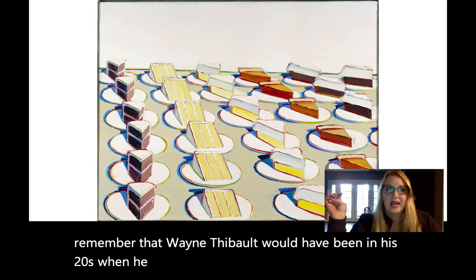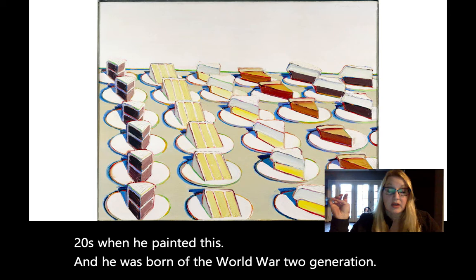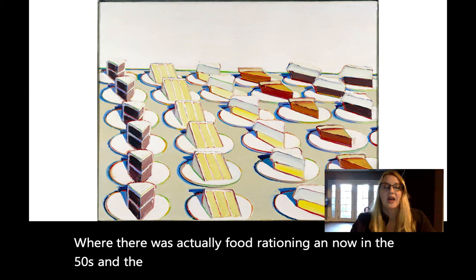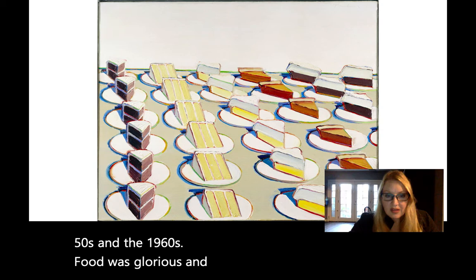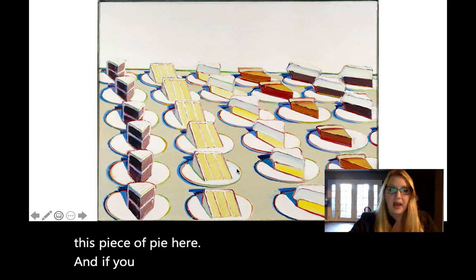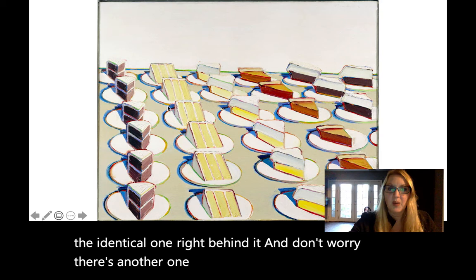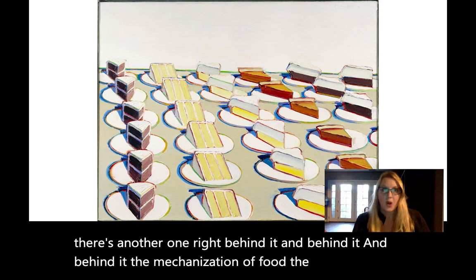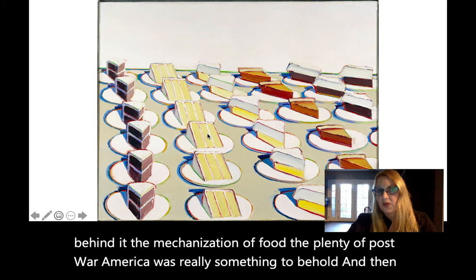You have to remember that Wayne Thiebaud would have been in his 20s when he painted this, and he was born of the World War II generation, where there was actually food rationing. And now, in the 50s and the 1960s, food was glorious and available. You could take this piece of pie, and if you ate that one, you could come back and get the identical one right behind it — and there's another one right behind it and behind it. The mechanization of food, the plenty of post-war America was really something to behold.